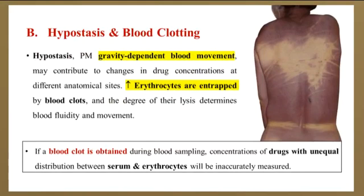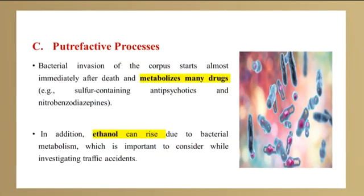Hypostasis, which is a post-mortem gravity-dependent blood movement, may contribute to changes in drug concentrations at different anatomical sites. In addition, a large number of erythrocytes are entrapped by blood clots and the degree of their lysis determines blood fluidity and movement. If a blood clot is obtained during blood sampling, concentrations of drugs with unequal distribution between serum and erythrocytes will be inaccurately measured. Bacterial invasion of the corpus starts almost immediately after death and metabolizes many drugs such as sulfur-containing antipsychotics and nitrobenzodiazepines. Additionally, ethanol can be produced and rise due to bacterial metabolism, which is important to consider while investigating traffic accidents.